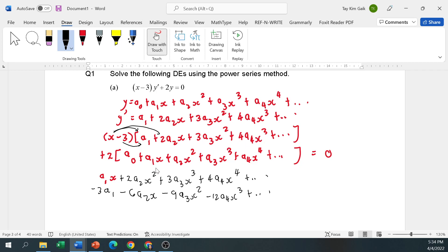And then the third term, expand it. You have 2a0 plus 2a1x plus 2a2x squared plus 2a3x cubed plus 2a4x to the power 4.